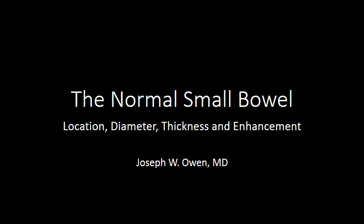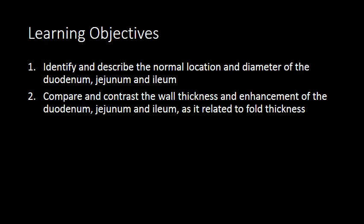In this screencast, we will discuss the normal features of the small bowel. At the end of this podcast, you should be able to identify and describe the normal location and diameter of the jejunum, duodenum, and ileum, and compare and contrast the normal wall thickness and enhancement of the different segments of the small bowel.